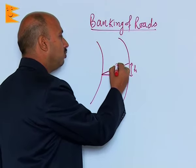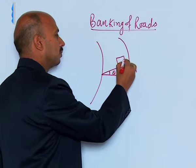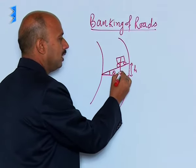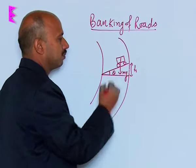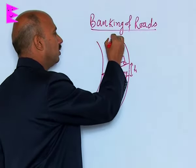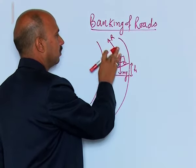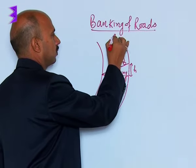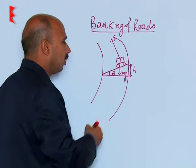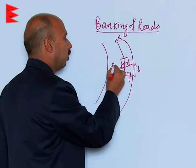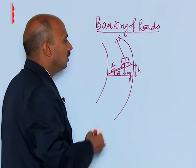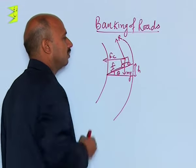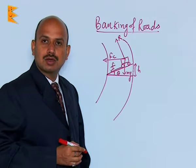Now, the car is over here. Many forces are acting here: one is mg acting to this side, normal reaction acting to this side, frictional force acting to this side along this surface. There are three forces, and centripetal force acting to this side here, fc. So these are the forces acting on the car.